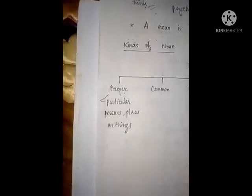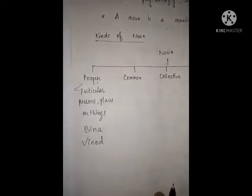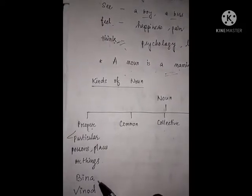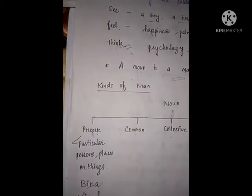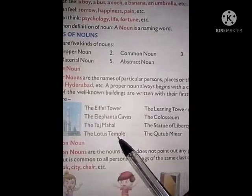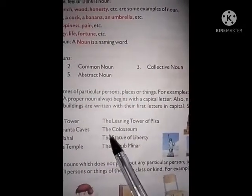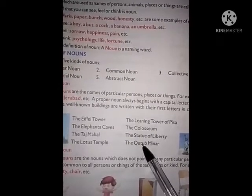Examples of proper noun — you can see Bena. A proper noun always begins with a capital letter. Here, examples of proper noun: Bena — both begin with capital letters. Some other examples of proper noun are well-known buildings: the Eiffel Tower, the Elephanta Caves, the Taj Mahal, the Lotus Temple, the Leaning Tower of Pisa, the Colosseum, the Statue of Liberty, the Kutub Minar. All these are also examples of proper noun.